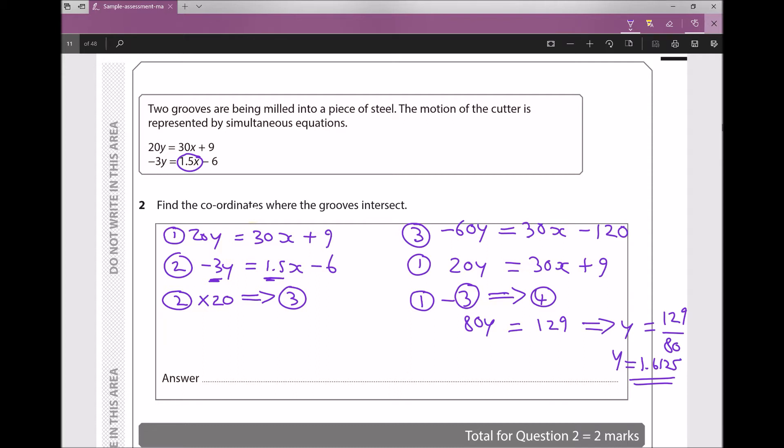But I'm not quite finished because I still need to find my x component. And I actually have a choice here. All of the equations that are written—equation one, two, three, and four—are all valid equations. So I can use any of those equations to find my x coordinate. And I'm going to use equation one.